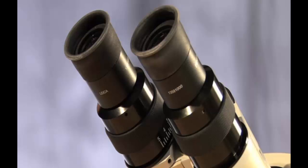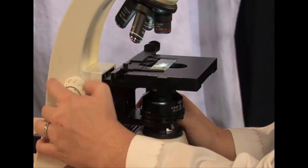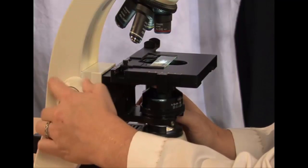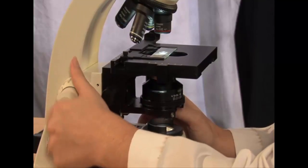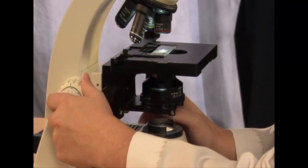Put your eyes to the ocular lenses and turn the coarse adjustment knob to bring the stage to its highest position. Now start to look for the letter E. You may have to turn the coarse adjustment knob to slightly lower the stage. This is okay because you want to bring the letter E into a nice, sharp focus.